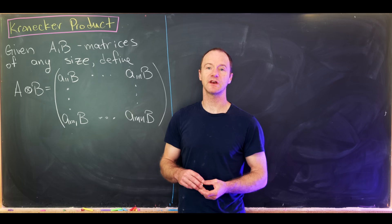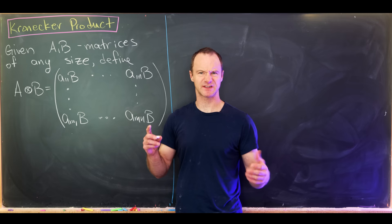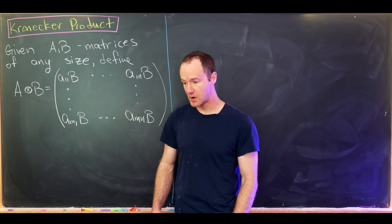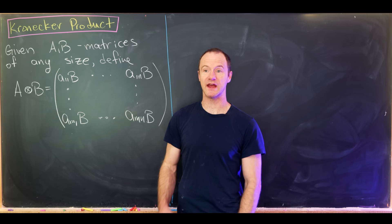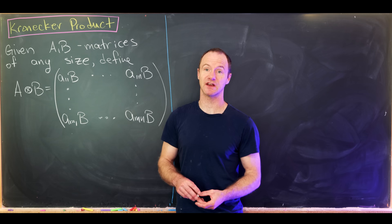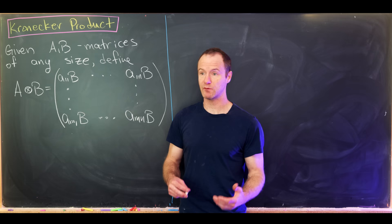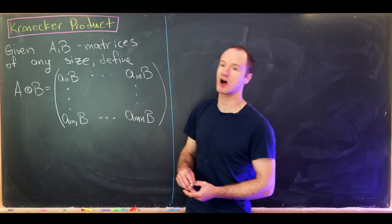If you've ever learned anything about matrices, you might recall that you're only allowed to multiply two matrices if their sizes match in a certain way. After learning that, you might ask yourself: is there some more general way to multiply matrices of any size? In fact, there is — and the way we'll explore today is called the Kronecker product.